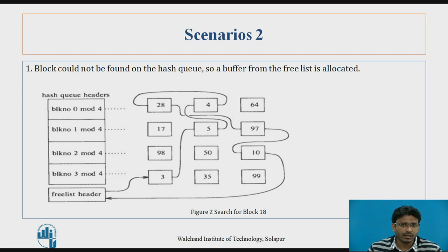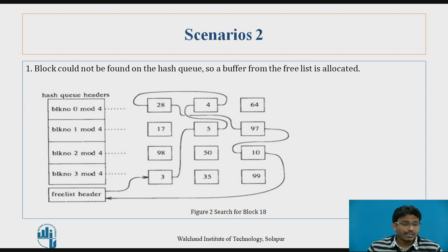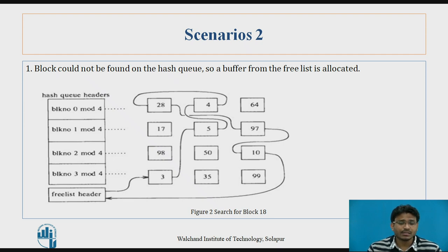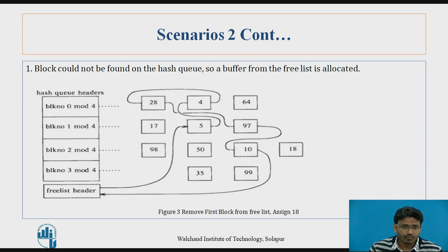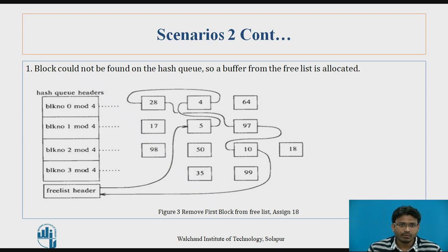In our free list, we have buffers 3, 5, 28, 4, 97, and 10 linked together. To allocate a free buffer, as explained in the previous video, we use the least recently used buffer. Here, the least recently used buffer is identified as buffer 3. We remove the first block from the free list and assign it to block 18. So now block number 2 in the hash queue contains buffers 98, 50, 10, and 18. This is scenario 2.